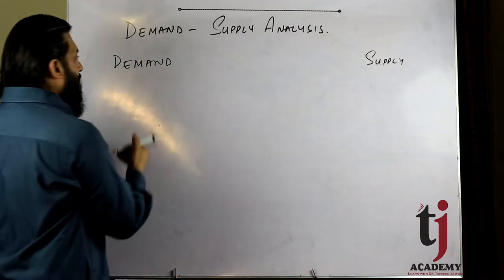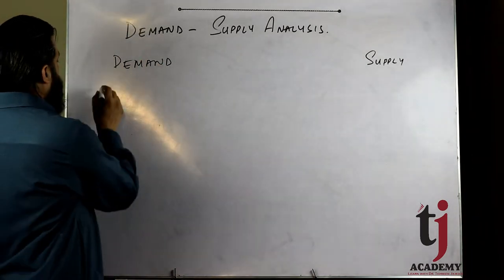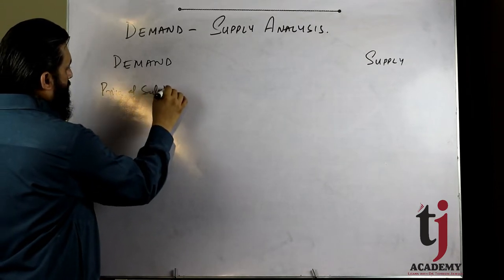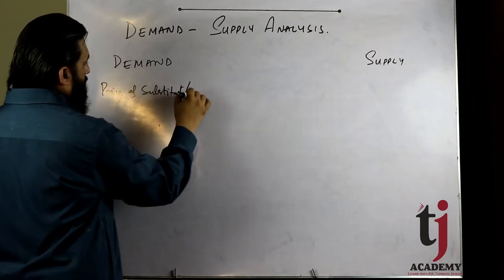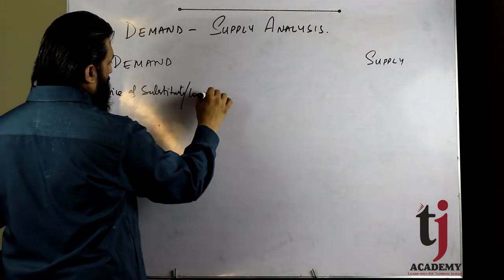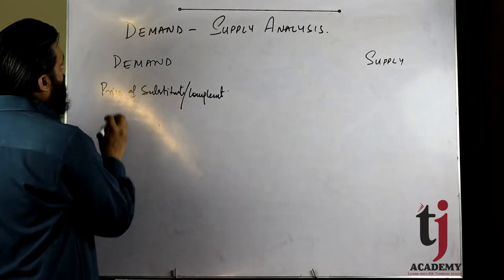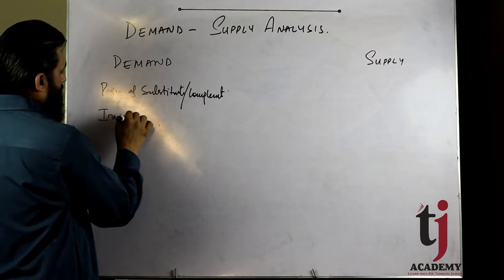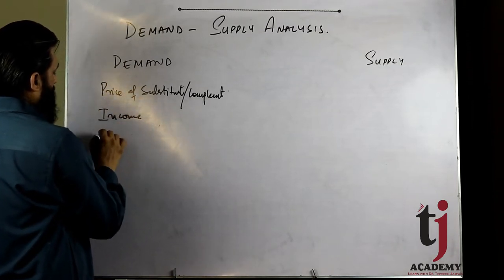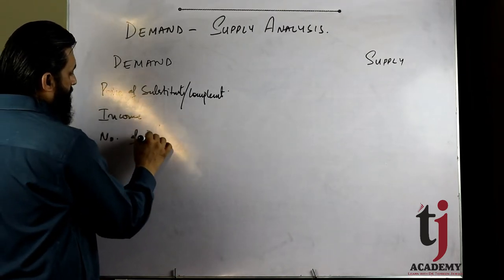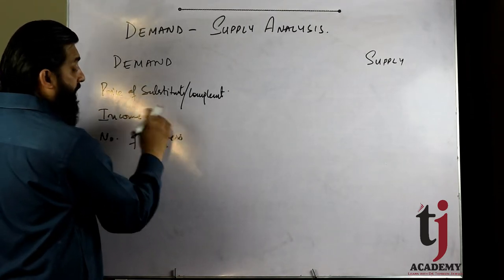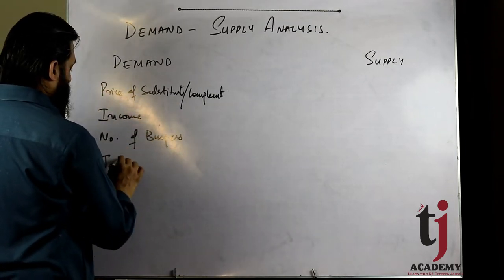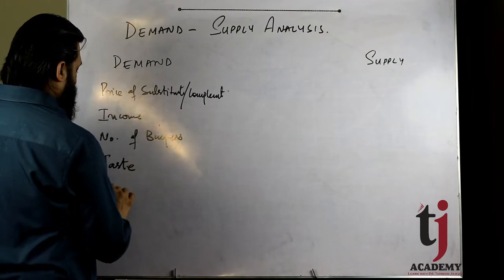Some factors affect demand other than price. We have discussed: price of substitutes or complements, income of consumers, number of buyers, taste, and expectations. These are the other-than-price factors on the demand side.